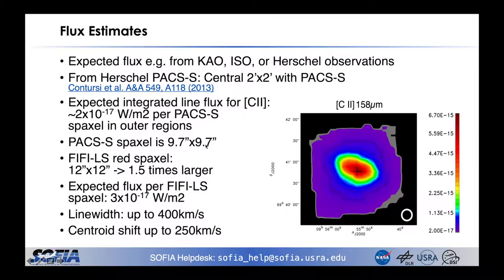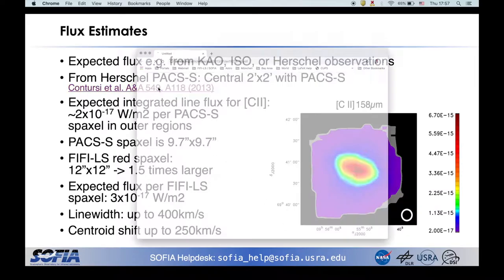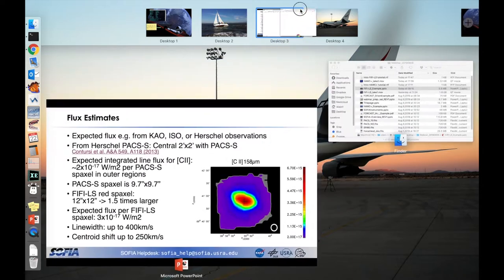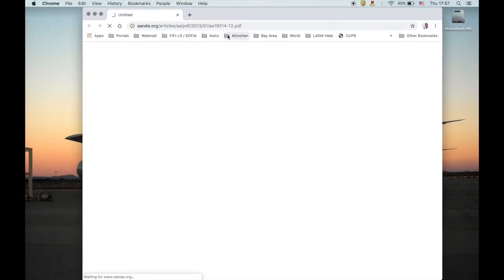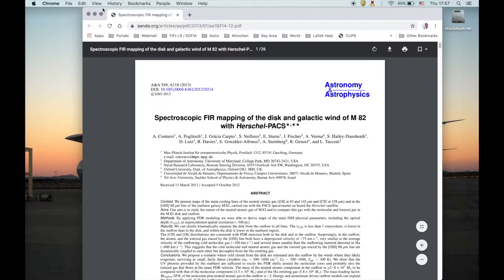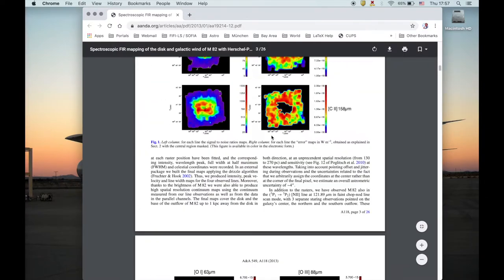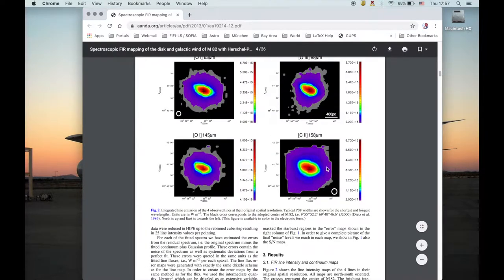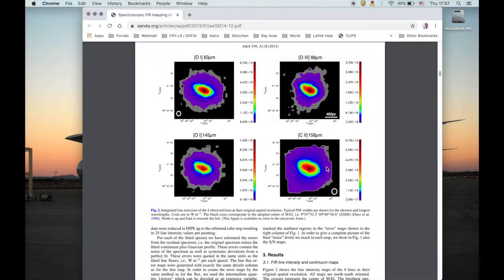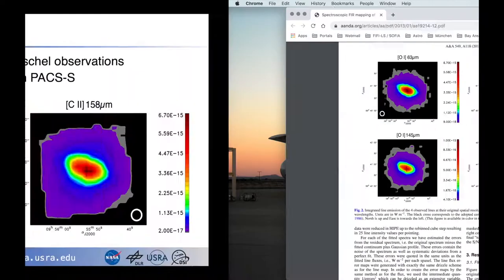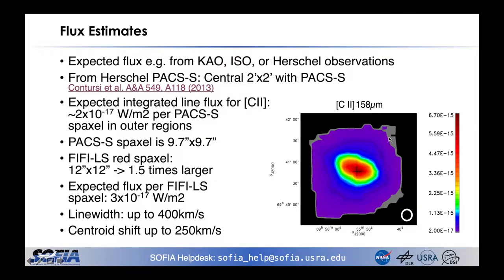Here, there is a paper by Krontorsi et al. which observed the central part of M82. In figure 2, we see the central part of M82 in the C-plus line at 158 micron. In the outskirts, you get 2 times 10 to the minus 17 Watt per square meter per spaxel, per spatial pixel of PACS. The PACS spatial pixel is 9.7 arcseconds on the side.